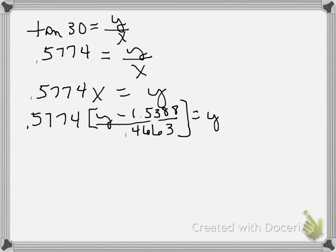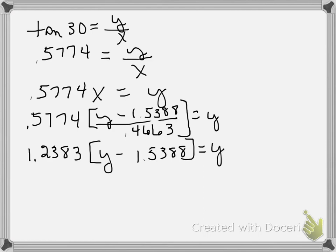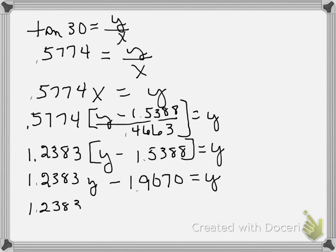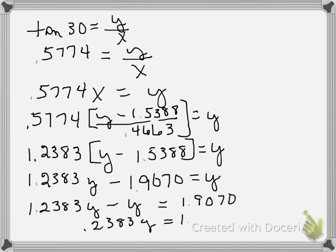That equals y. Dividing 0.5774 by 0.4663 gives 1.2383, so we have 1.2383 times the quantity y minus 1.5388, equals y. Distributing: 1.2383y minus 1.9070 equals y. Subtracting y from both sides and adding 1.9070 to both sides gives 1.2383y minus 1y, which is 0.2383y, equal to 1.9070.